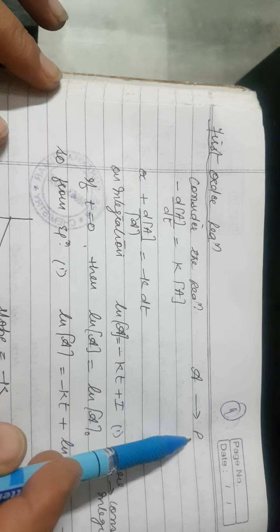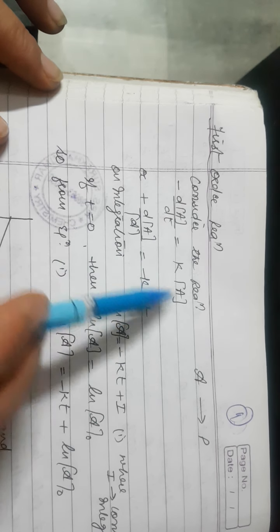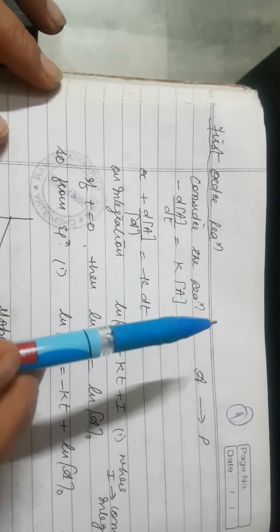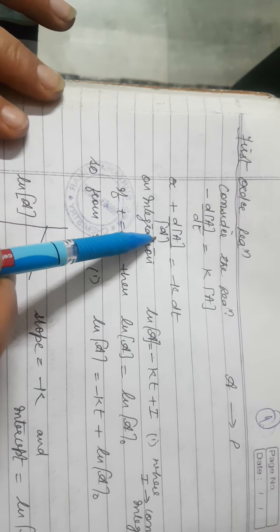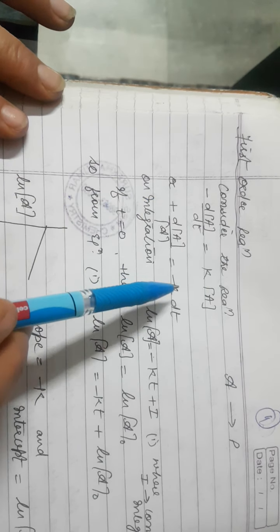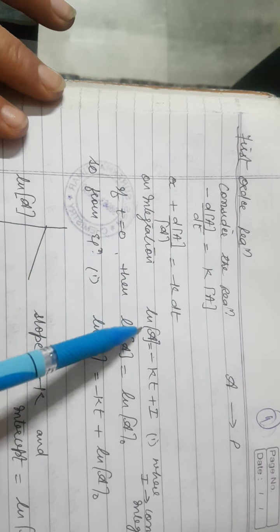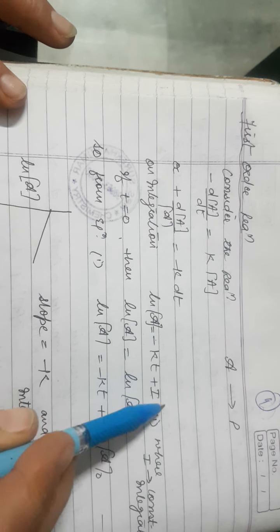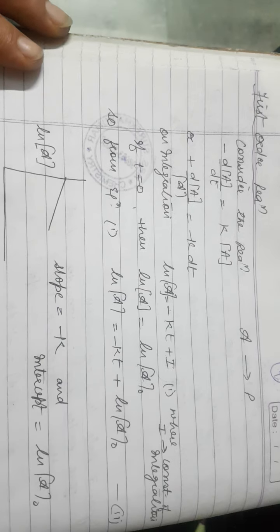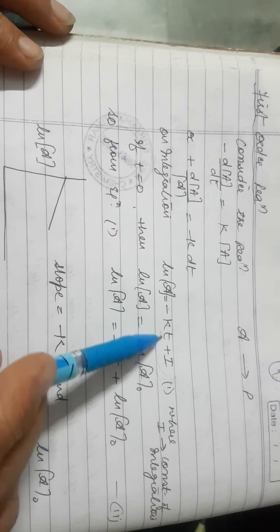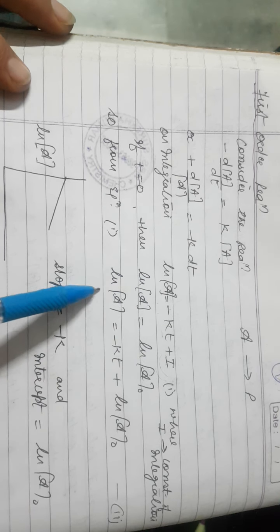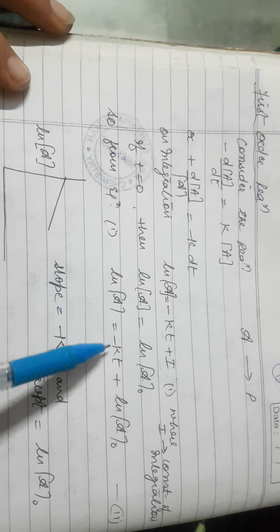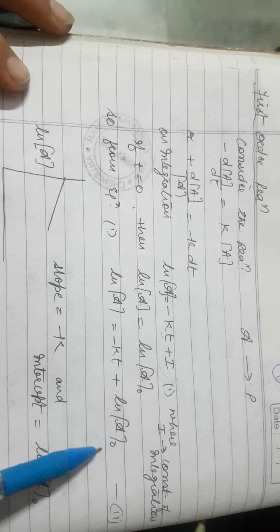For first order reaction: consider A → product. −d[A]/dt = K[A]¹. Rearranging: d[A]/A = −K dt. Integrating: ln A = −KT + I (where I is the constant of integration). When T = 0, A = A₀, so ln A₀ = I. Therefore: ln A = −KT + ln A₀.